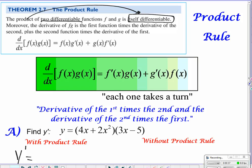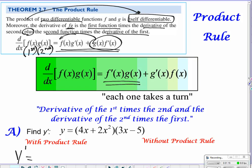Moreover, the derivative of f times g is the first function times the derivative of the second function, plus the second function times the derivative of the first function, f prime of x. So what I'm seeing here, this is what they were referring to as my first function, and this is the second function.